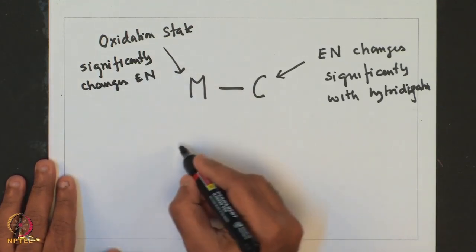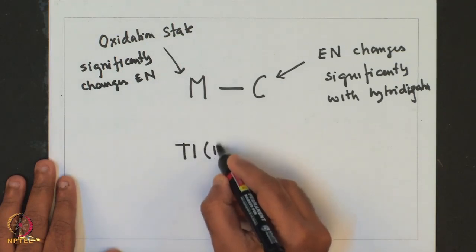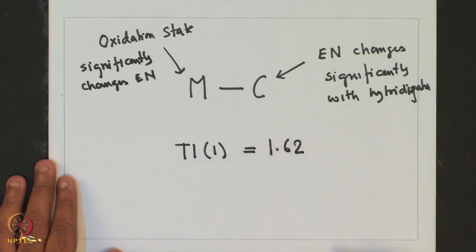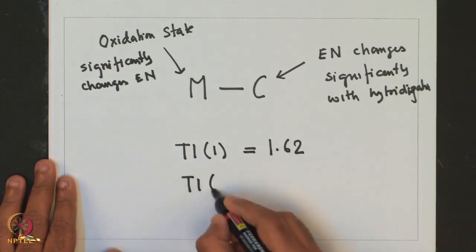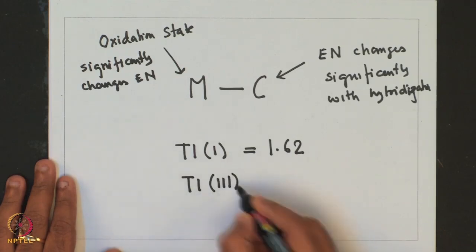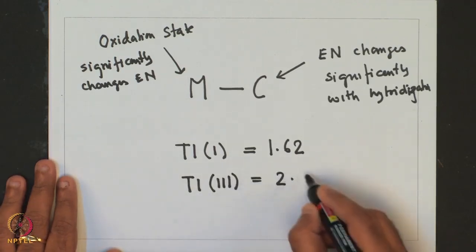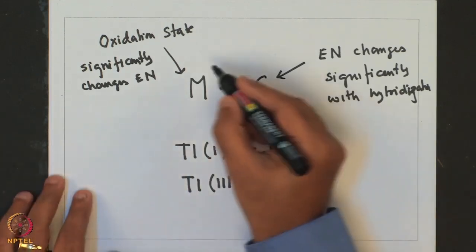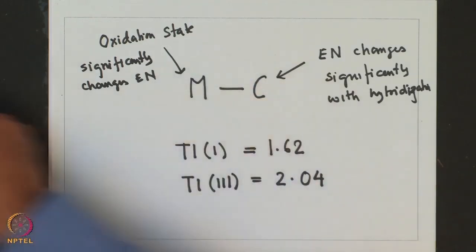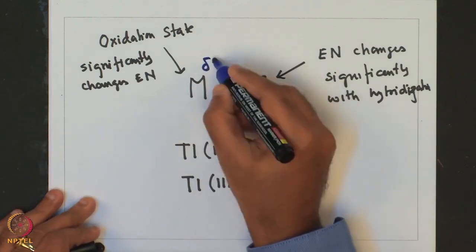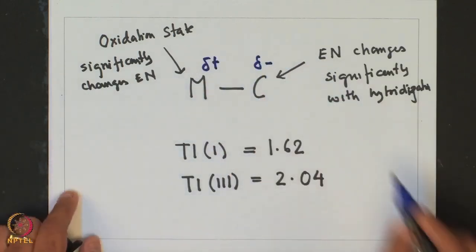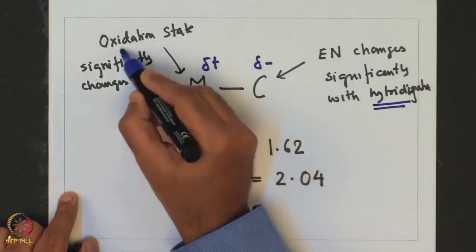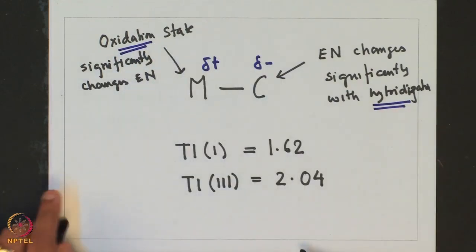To illustrate this point, let us take a look at thallium. In its +1 state, its electronegativity is 1.62. Whereas for thallium in the +3 state, the electronegativity changes to 2.04. So we see that the polarity of the metal-carbon bonds is very much dependent on the hybridization of the carbon as well as the oxidation state of the metal.